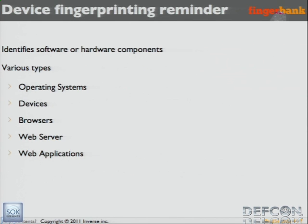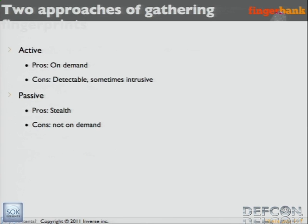So, device fingerprinting: what it does is that it identifies pieces of your software or hardware. You're probably familiar with p0f and stuff like that. There are various types of it: operating systems, devices, browsers, web servers, web applications. It's another type of signature, more or less.